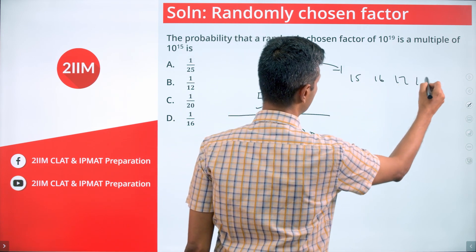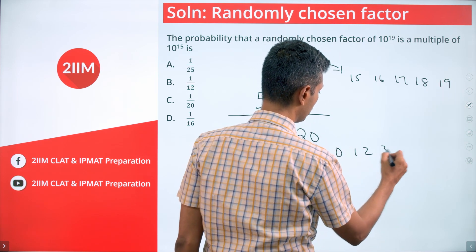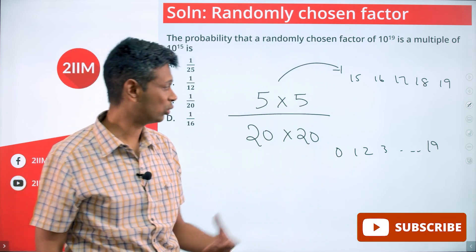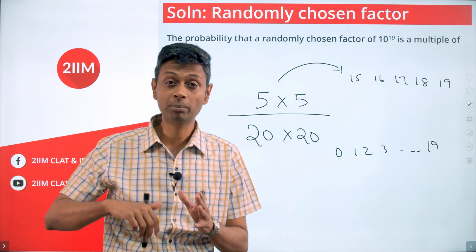Here, powers take values 0, 1, 2, 3, all the way to 19. Given that you are selecting one out of these, what is the probability that it will happen to be this, for both the power of 2 and the power of 5?